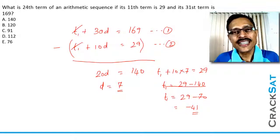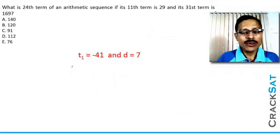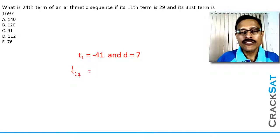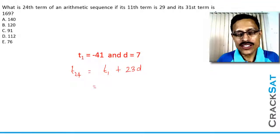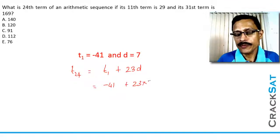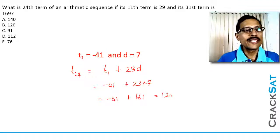All we need to do now is write an equation to find out the 24th term. The 24th term T24 will be equal to the first term plus 24 minus 1, which is 23, times the common difference. We know T1 is minus 41 and d is 7. So this is minus 41 plus 23 times 7, which is minus 41 plus 161, equal to 120. So the 24th term of the sequence is 120.